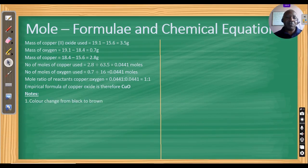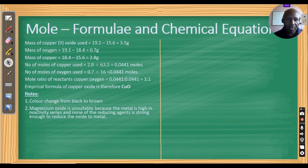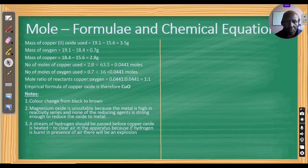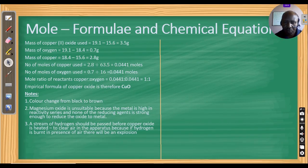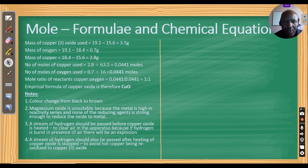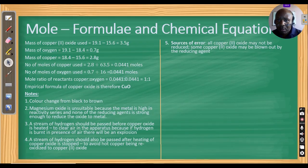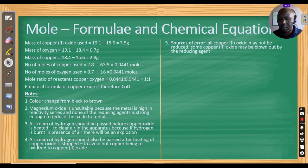Some notes on this experiment: there is a color change from black to brown. Magnesium oxide is unsuitable because the metal is high in the activity series and no reducing agent is strong enough. A stream of hydrogen should be passed before heating to clear air from the apparatus — if hydrogen burns in the presence of air there will be an explosion. Hydrogen should also be passed after the experiment to avoid hot copper being re-oxidized, and sources of error include incomplete reduction or copper oxide being blown out.